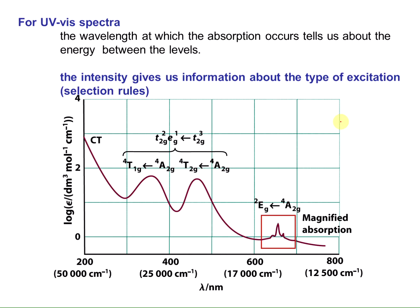The wavelength at which absorption occurs tells us about the energy between the levels. In simple D1 and D9 cases, we can just look at the energy for those transitions because you only have one type of transition. But when you have various ways to arrange electrons and worry about states, we use Tanabe-Sugano diagrams. Now we want to look at the intensity and what it tells us about the type of excitation — that gets us into selection rules.